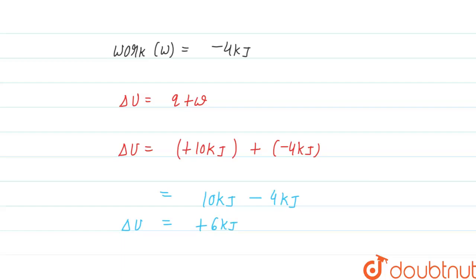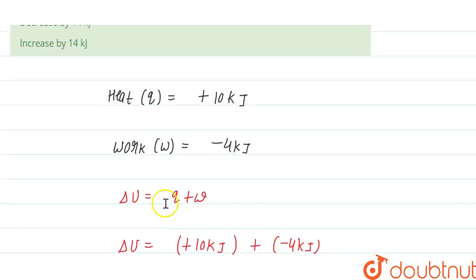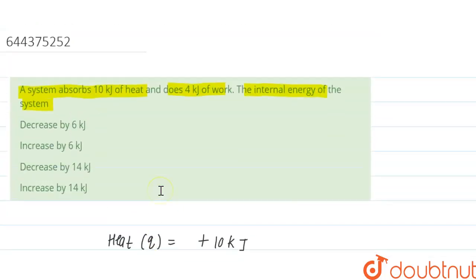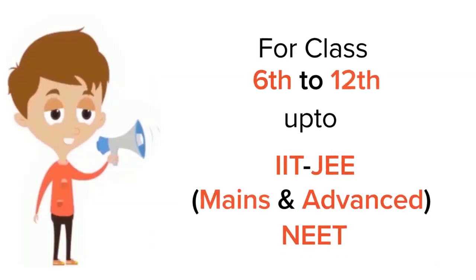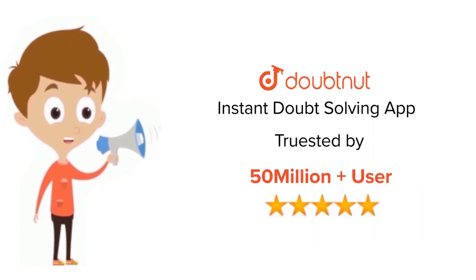The positive sign indicates that the internal energy of the system is increased. So the internal energy of the system is increased by 6 kilojoules. Option number two is the correct answer. I hope this answered your question, thank you.